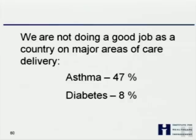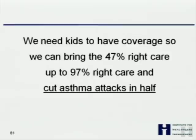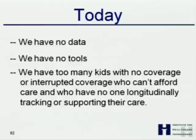If we get everybody covered and we fix care, then we can make care more affordable and we don't do it by rationing. We know right now that we're not doing a good job on major areas of care. For kids with asthma, we're only getting care right 47% of the time as a country. For people with diabetes, we're only getting the right package of care 8% of the time. And today for those kids across the country, we have no data.